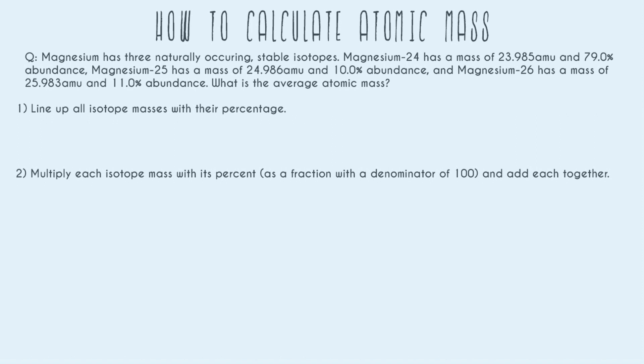Magnesium-24 has a mass of 23.985 AMU and 79% abundance, which means that 79% of magnesium atoms that exist on Earth have a mass of 23.985. Abundance is just how much percent out of 100 this particular isotope has. And then we have magnesium-25 with a mass of 24.986 AMU and a 10% abundance. And lastly, we have magnesium-26 with a mass of 25.983 AMU and 11% abundance. So what's the average atomic mass? That's usually how these problems go.